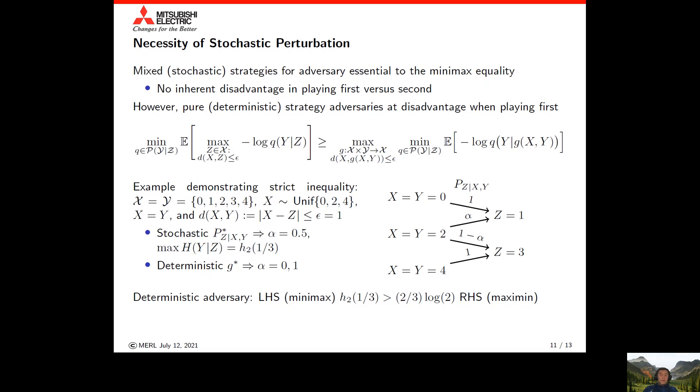What's interesting is that if you allow a stochastic adversary, the optimal thing to do is to map the X equals Y equals 2 case to Z equals 1 and Z equals 3 with 50-50 probability. In this case, this achieves maximizing the conditional entropy to be the binary entropy function of 1 over 3.